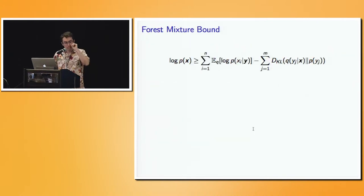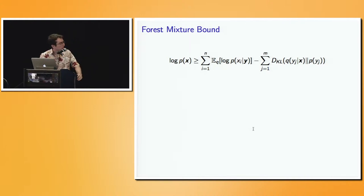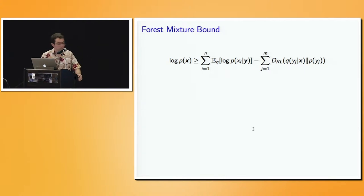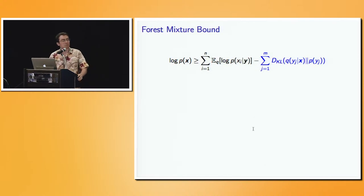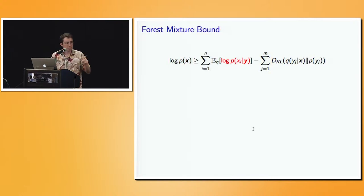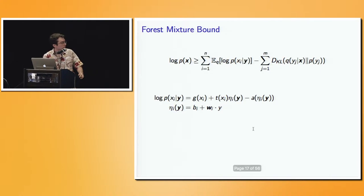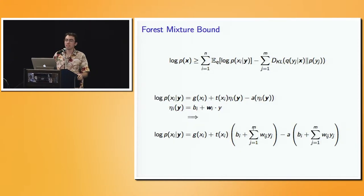Alright, we're ready to do some algebra. Here's the ELBO, and we're trying to lower bound it by an objective that separates as a sum of terms each involving only a single Y_j. The KL divergence term is already exactly how we want it — it separates as a sum of terms each involving only a single latent variable. All the problem is in the conditional likelihoods. Luckily, our assumptions simplify this form: the conditional likelihood takes on a specific form from the exponential family assumptions.